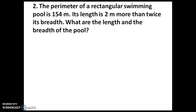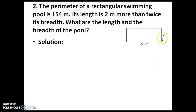Let's move to the next question. The perimeter of a rectangular swimming pool is 154 metres. Its length is 2 metres more than twice its breadth. What are the length and breadth of the pool? What is given in the question? Perimeter is given, and it is also given that length is 2 metres more than twice its breadth. We have to find out the length and breadth.